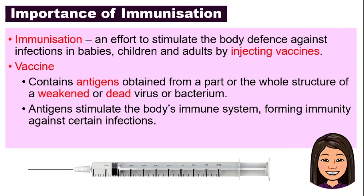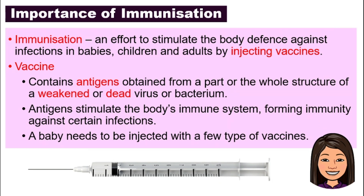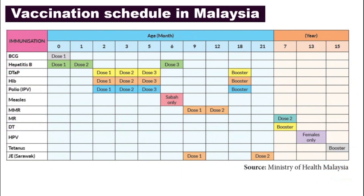When antigens are injected into our body, remember what our body does: in the third line of our body's defense, the white blood cells start to produce antibodies. So the antigens stimulate our body's immune system and we start forming immunity against certain infections. Babies need to be injected with a few types of vaccines. For example, in Malaysia, this is the vaccination schedule — from the day you are born all the way up till you are 15, there are different types of vaccines to take.